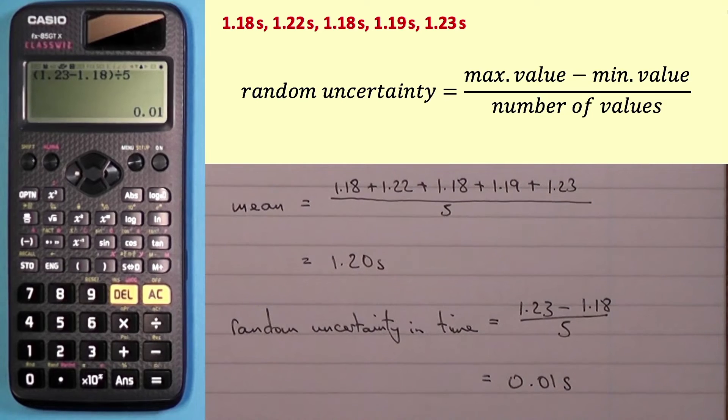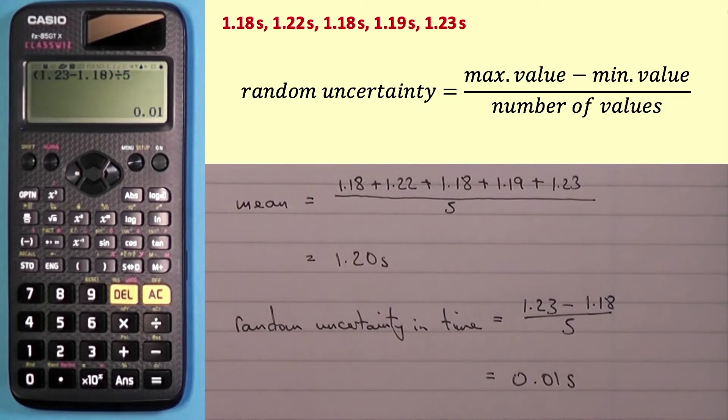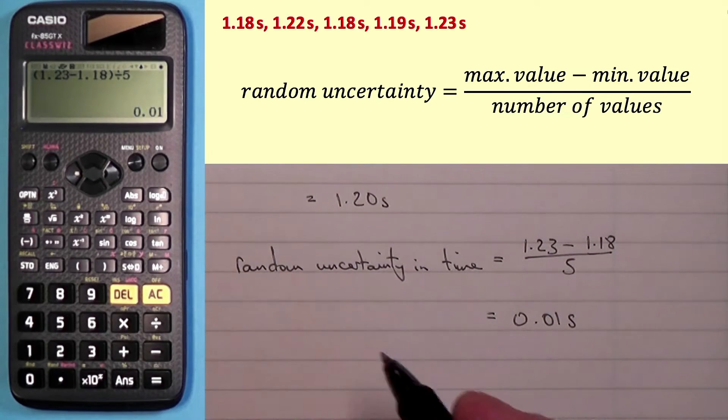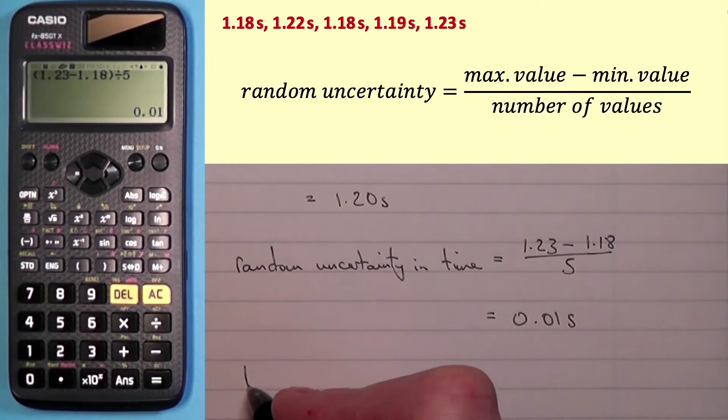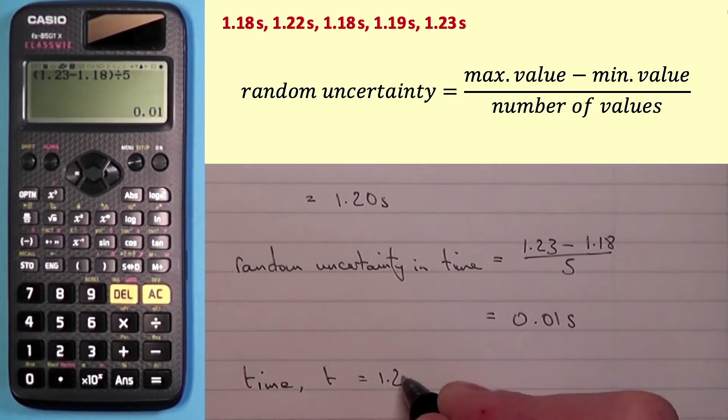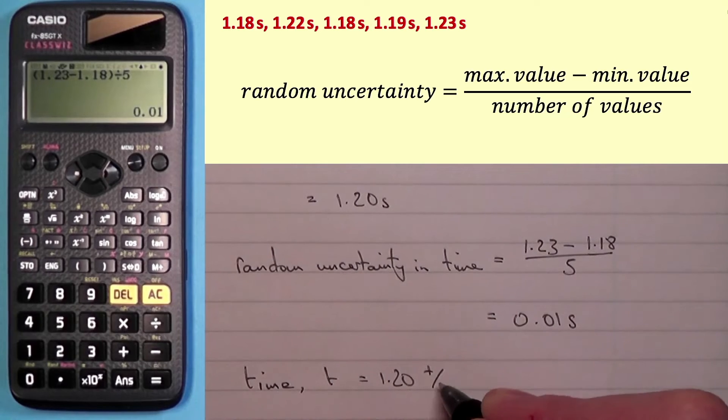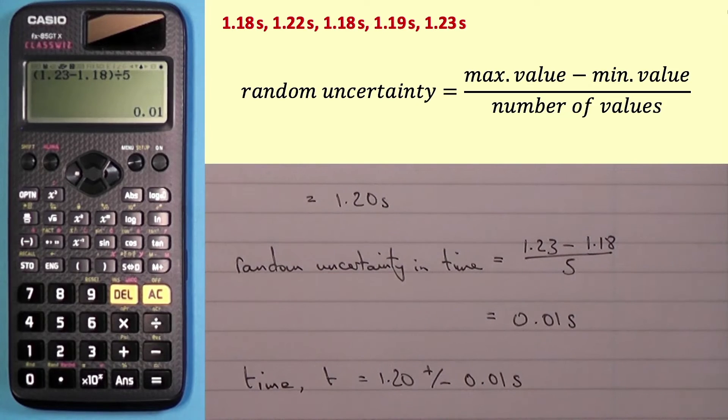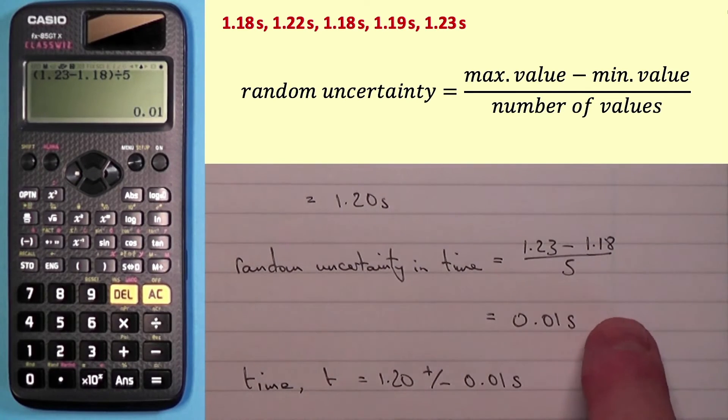Now, sometimes you might be asked to combine those two if we were asked to work at the mean and the associated random uncertainty. So that would of course mean that time t would be 1.20 plus or minus 0.01 seconds if we're combining the two. If obviously if we were asked a question, maybe part A to find the mean and part B to find the random uncertainty, then what we did at the start would have been fine.